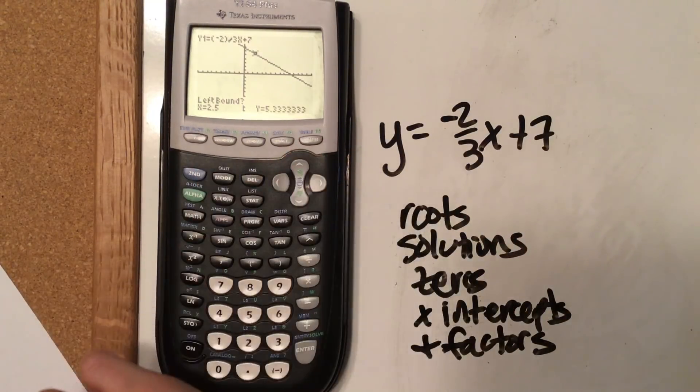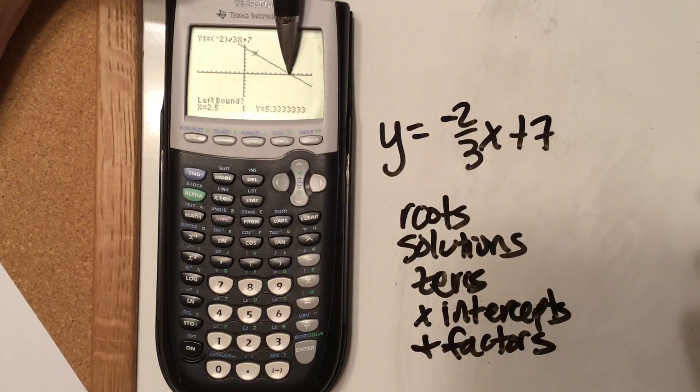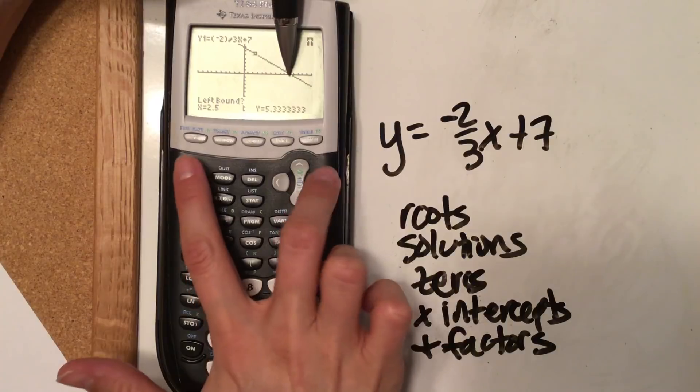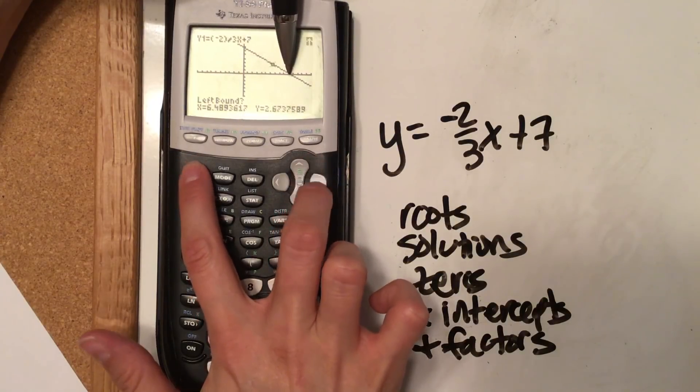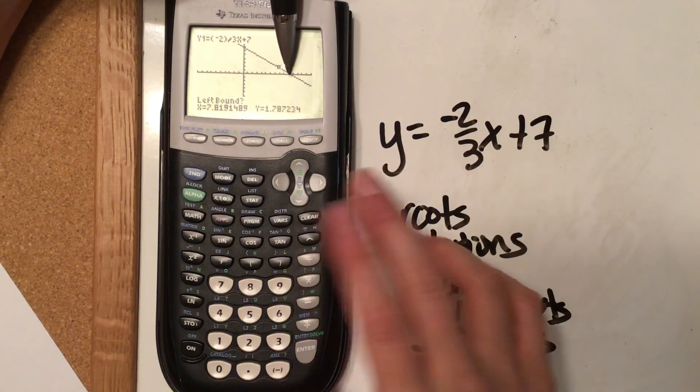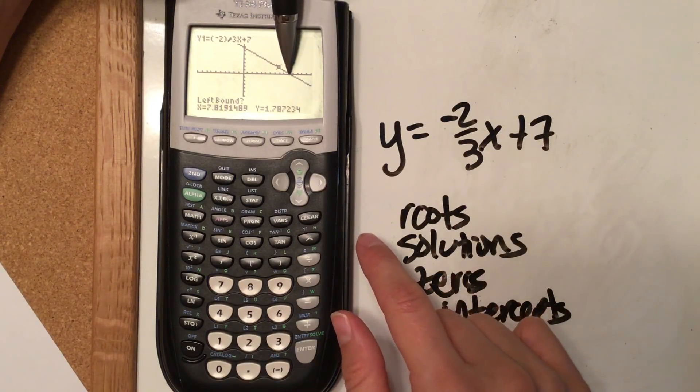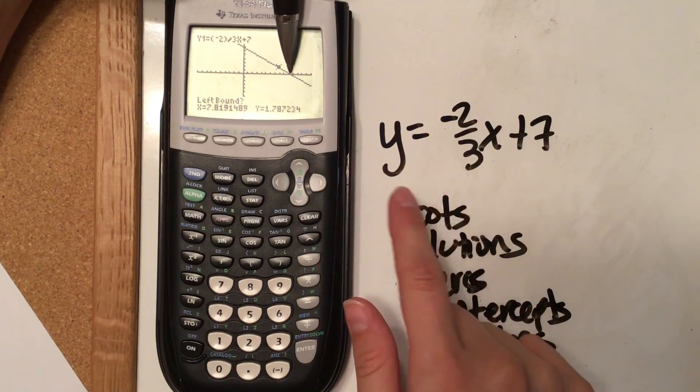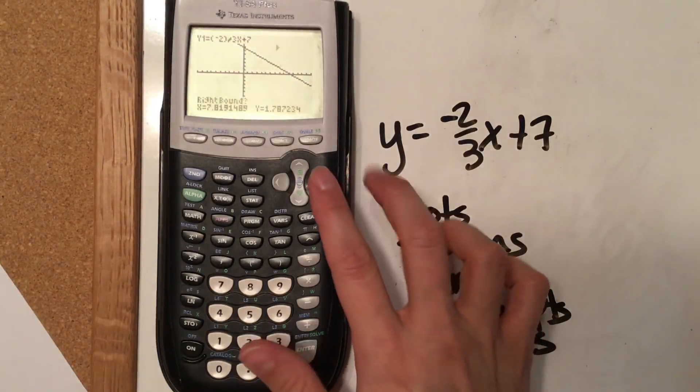Now it's asking me to be to the left of the x-intercept. So our x-intercept is here, so I want my cursor to be to the left of it. It is to the left of it. I like to go a little bit closer. Otherwise, it takes the calculator a little bit longer to calculate the x-intercept. So I like to be near it. So I'm near it, but I am definitely to the left of it. So I'm going to hit Enter.